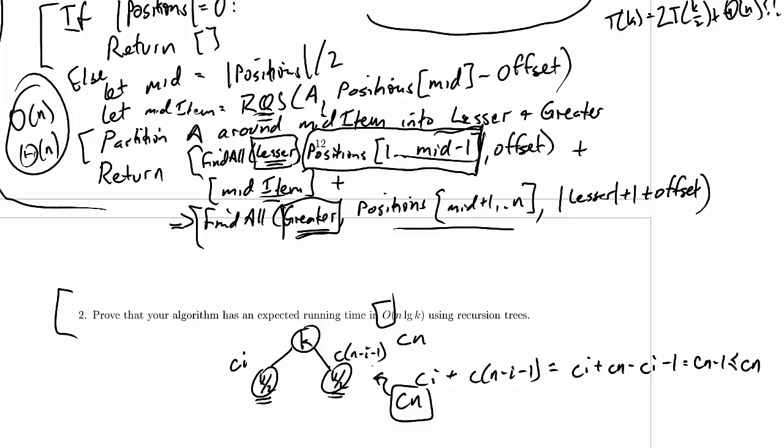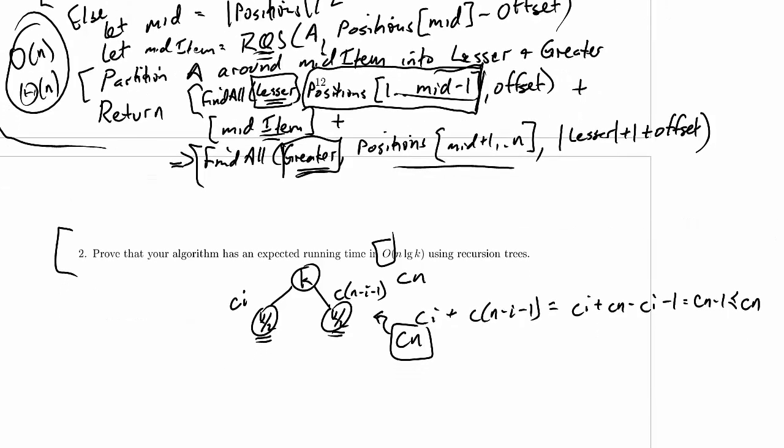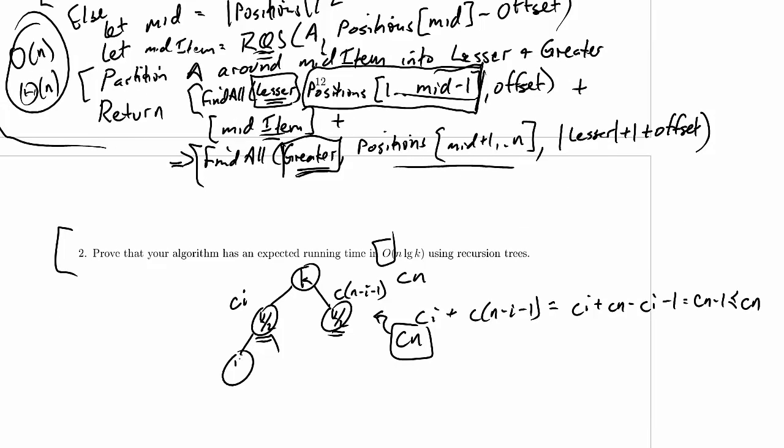So at every level, we're going to be able to make this same argument. When we go down to the next level, for example, and we've got two k over four nodes here and two here, the total work at this level is going to be c times i over here and c times n minus i minus 1 here, actually less than or equal to those.